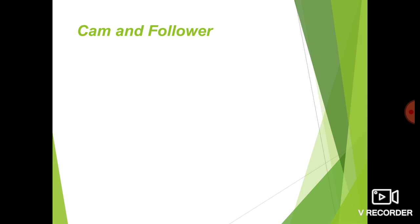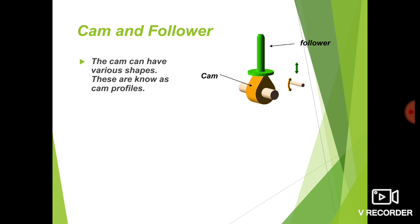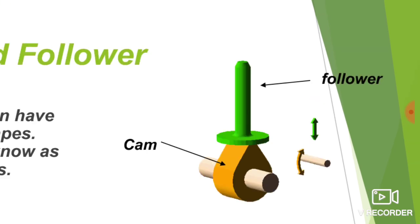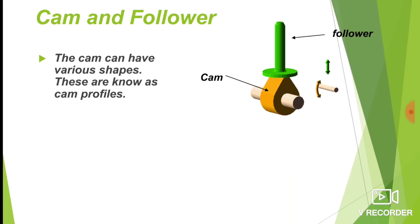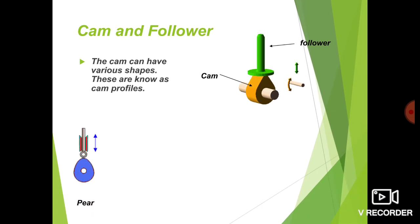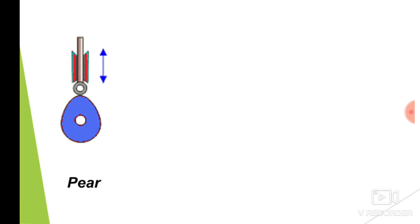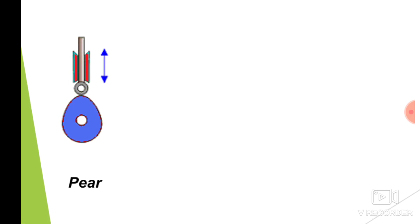Now we will discuss the types of cam. The cam is nothing but a rotary member, and the cam can have various shapes — these are known as cam profiles. As you change the shape of the cam, you will get different profiles. Here you can see the member in yellowish color is the cam, and the member in green color is the follower. The first shape is a pear shape. Here the cam is shown in blue color with a pear shape, and as the cam rotates, the follower will reciprocate inside the guide, which is shown in red color.